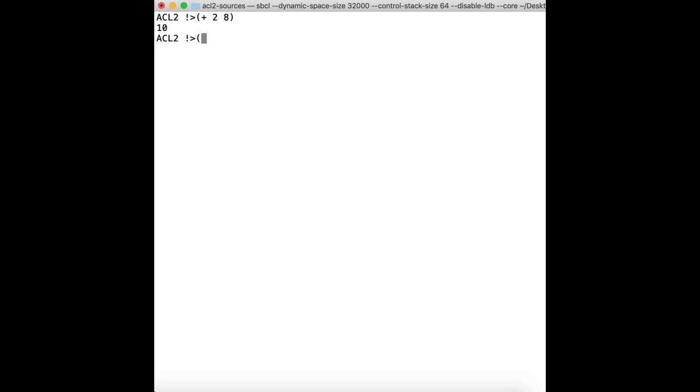We can do more complex things with this, so we can nest function applications. Simple example: if we want to multiply 3 by what we just evaluated, 2 plus 10, we would enter the multiply symbol, multiply 3, and then have a nested function application of adding 2 and 8. So 2 and 8 is 10, times by 3 should give us 30. And there we go. As an aside, those of you who have done some Lisp already may well realize that plus isn't actually a function, it's a thing called a macro. But the distinction isn't too important for the examples we're going to see in this video.